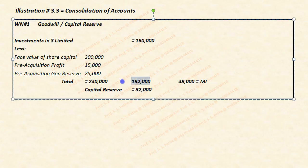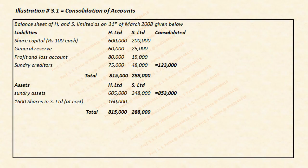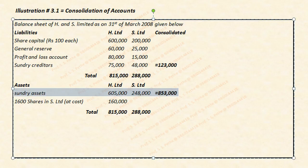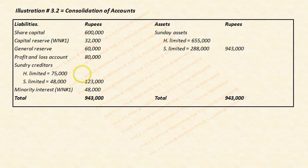The investment made was 1 lakh 60,000 rupees, and the capital benefits you are receiving are 1 lakh 92,000 — it means there is a profit, that is, a capital reserve. After this, you simply add the sundry creditors — other liabilities — and add the sundry assets. Once you are done with that, you can prepare the final consolidated balance sheet.